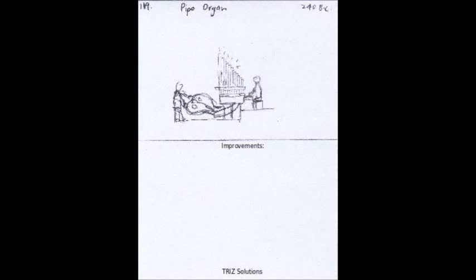The pipe organ is a musical instrument that produces sound by air flowing through a series of pipes, each producing a unique tone. It has played an important role in music history and has influenced the development of Western classical music. Here are some ways in which the pipe organ has changed the world.